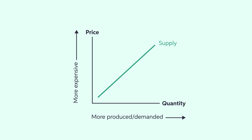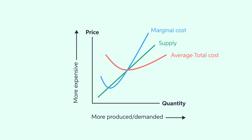Firms also have to consider production costs when making a good. Recall that when firms begin production, the average total cost might be higher than the marginal cost because of high fixed costs that get spread over a limited amount of quantity. However, as fixed costs get spread over each additional unit, the marginal cost might be higher than the average total cost over time. That's seen on the graph as point A moves to point B.